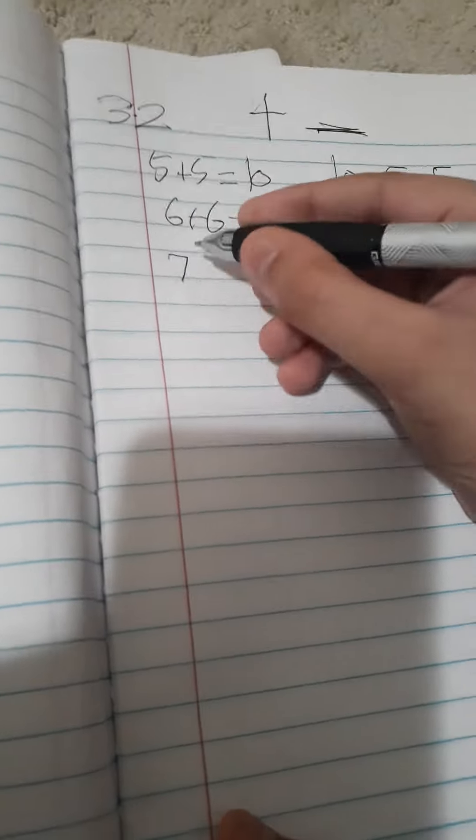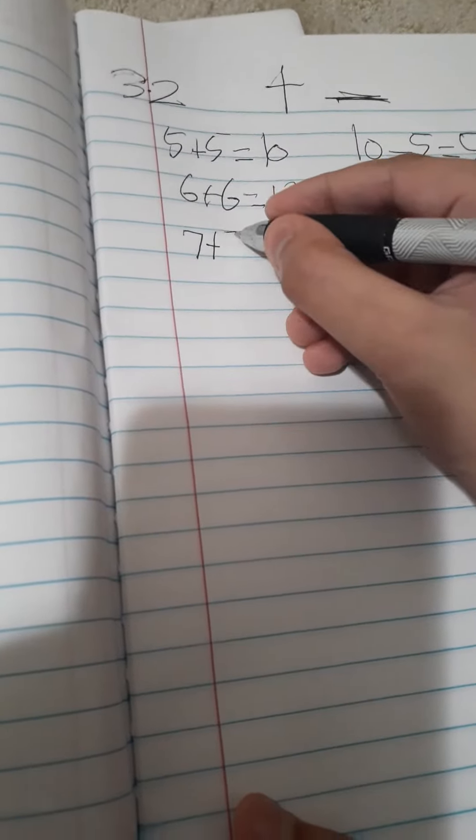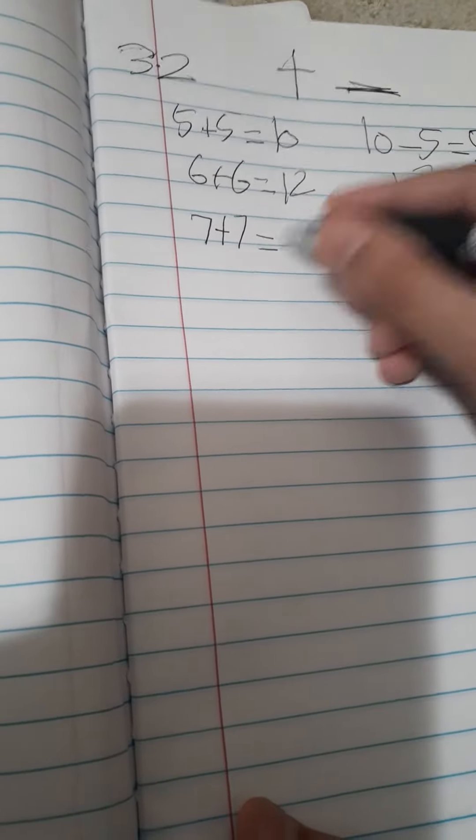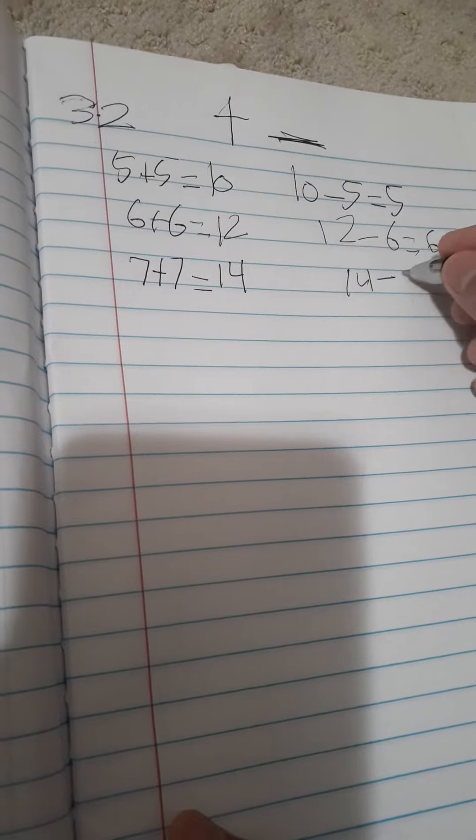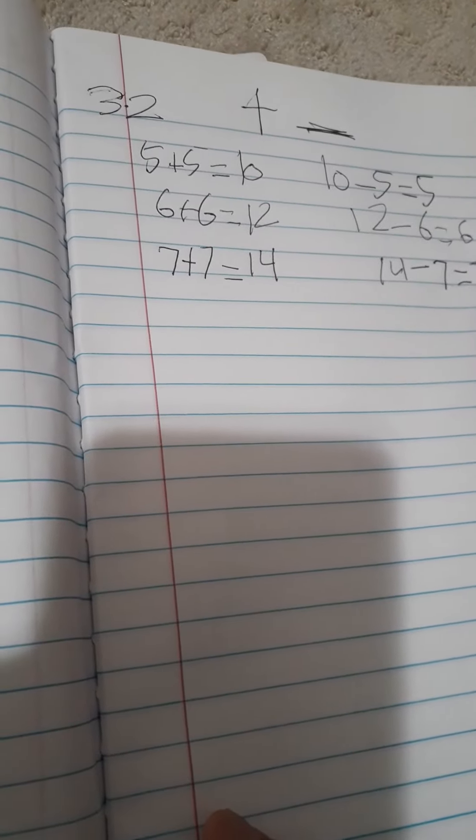Okay. 7 plus 7 equals 14. Okay, now the next question: 14 minus 7 equals 7.